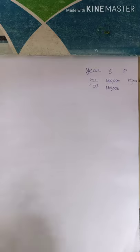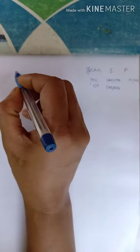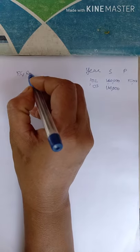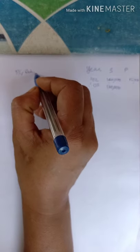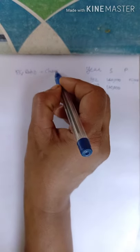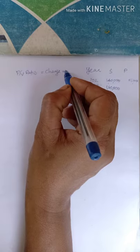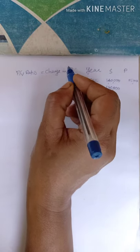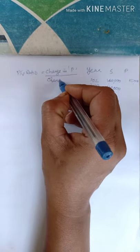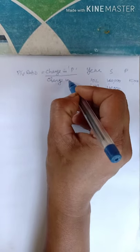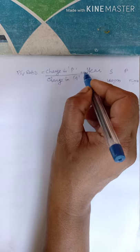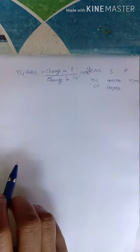Second formula: PV ratio is equal to change in profit divided by change in sales, into 100.